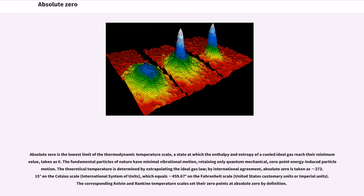The theoretical temperature is determined by extrapolating the ideal gas law. By international agreement, absolute zero is taken as minus 273.15 degrees on the Celsius scale, which equals minus 459.67 degrees on the Fahrenheit scale. The corresponding Kelvin and Rankine temperature scales set their zero points at absolute zero by definition.